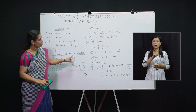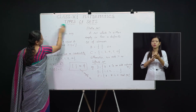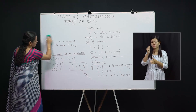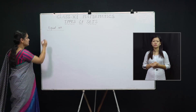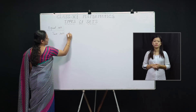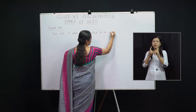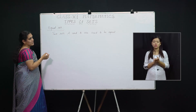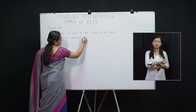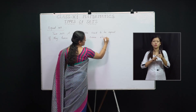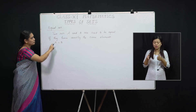So to recap: Singleton Set, Cardinal Number or Cardinality, Finite Set, and Infinite Set. Now we move on to the next type: Equal Sets. Two sets A and B are said to be equal if they have exactly the same elements. We denote this as A = B.